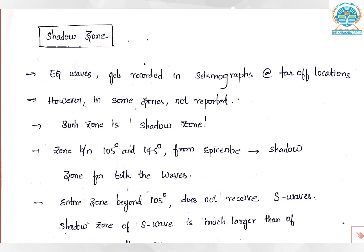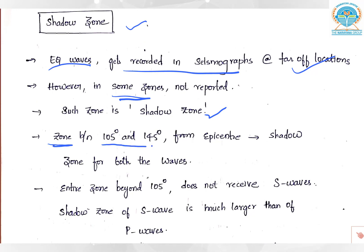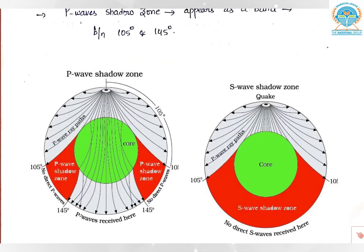Now let us see the concept of shadow zone, which helps us understand the interior of the earth. Earthquake waves are recorded in seismographs placed at different locations. Scientists found that in some zones waves are recorded and in some they are not. Zones in which waves are not reported are known as shadow zones. This shadow zone is the zone between 105 degrees and 145 degrees from the epicenter. In the diagram, the epicenter is the point directly above the focus on the surface.